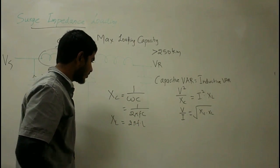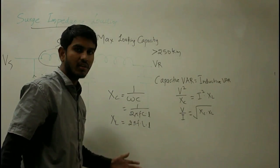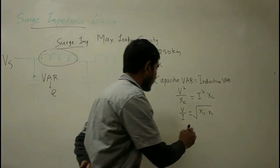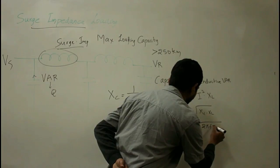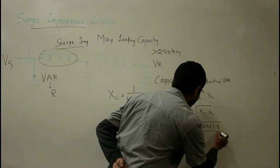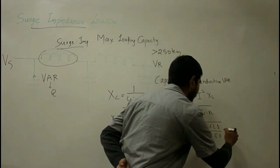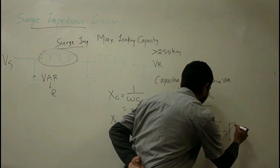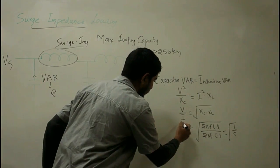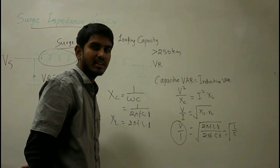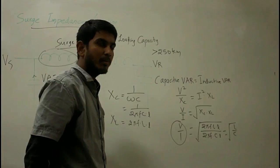If we consider per unit length, with L as the length of the transmission line, then XL = 2πF·L·l and Xc = 1/(2πF·C·l). From this we get V/I = √(L/C). This electrical quantity has the dimensions of electrical resistance and is your surge impedance, given by ZS.